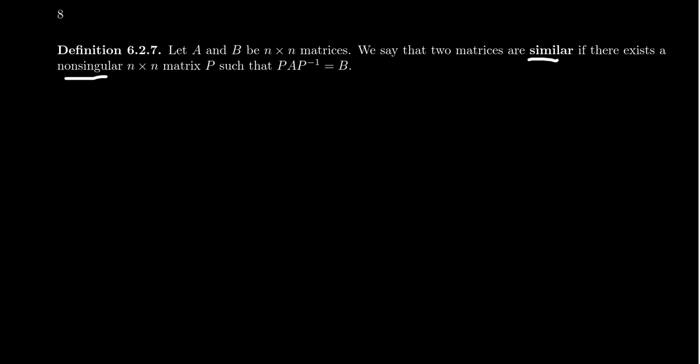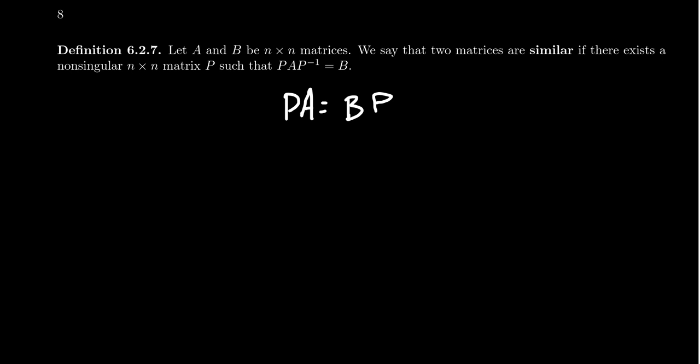Imagine we have two square matrices A and B — they're both N by N. We say that the two matrices are similar if there exists some non-singular N by N matrix P such that P·A·P⁻¹ is equal to B. So we can factor the matrix B and have A as a factor, but there must be these non-singular factors. Non-singularity is required for P; otherwise P⁻¹ doesn't exist. The matrices A and B themselves do not have to be non-singular — they could be singular. Note that this equation could be rewritten as P·A = P·B, but one has to be very careful about the order of operations — you can't commute the matrices willy-nilly.